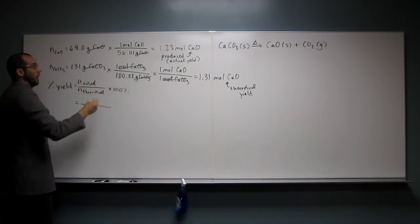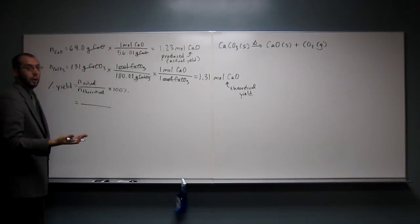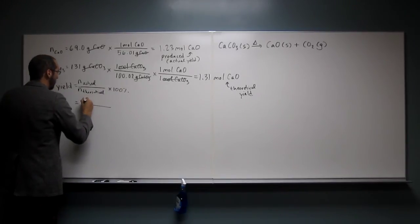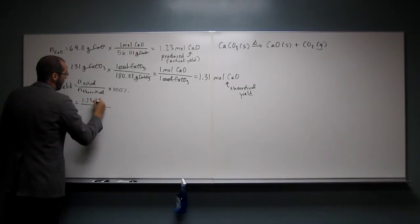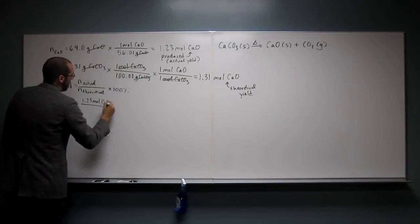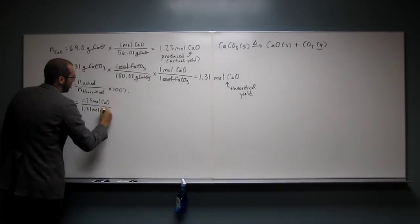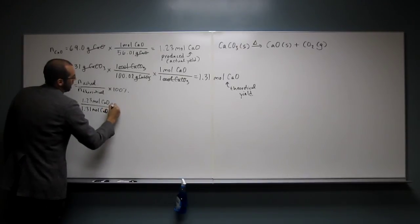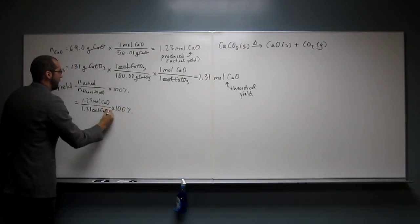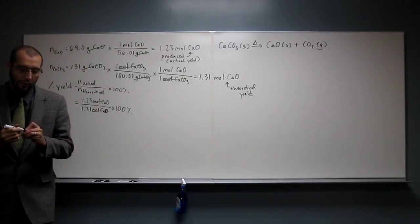Now we're comparing the same thing. Moles of calcium oxide to moles of calcium oxide. So we got 1.23 moles of calcium oxide divided by 1.31 moles of calcium oxide. And so moles of calcium oxide cancels.